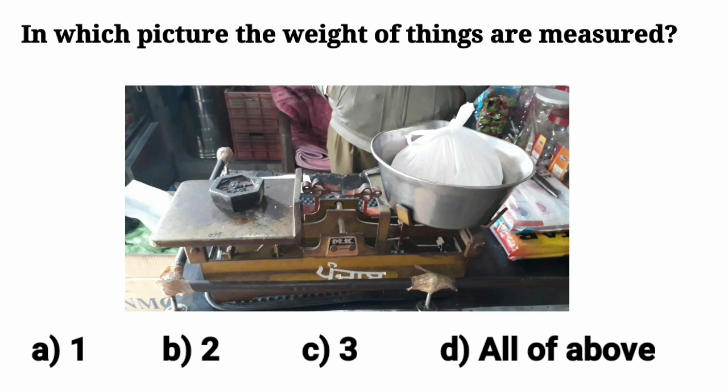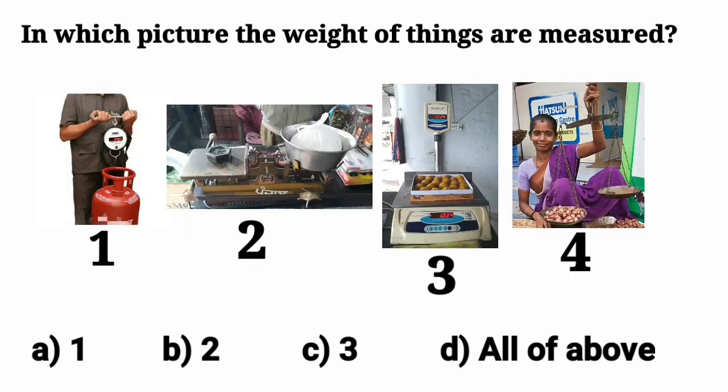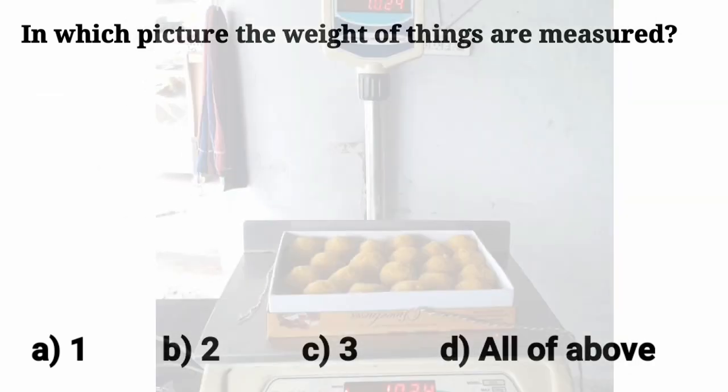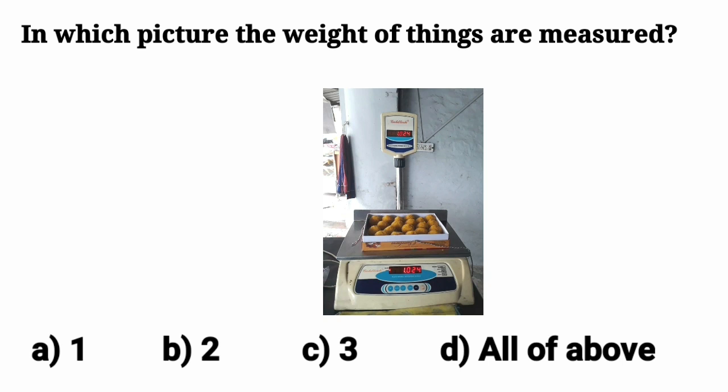And let's look at the third picture now. And you have to tell, what do you see there? Yes, we see that in the third pic, sweets are measured on a weighing machine.